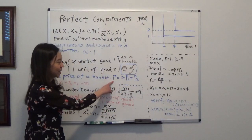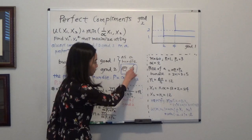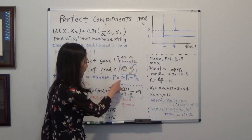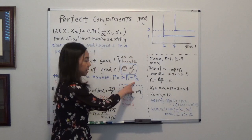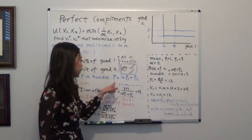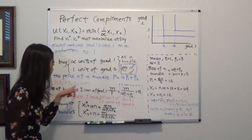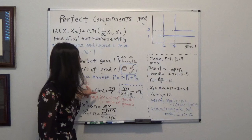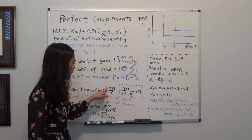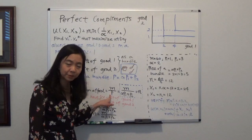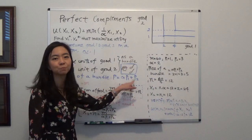We want to know the price of each bundle. The price of the bundle will be equal to alpha — that's the number of spoons of sugar — times the price of a spoon of sugar, plus the price of a cup of coffee. That will be the price of your bundle. So how many bundles can we purchase, given that we have a budget M?